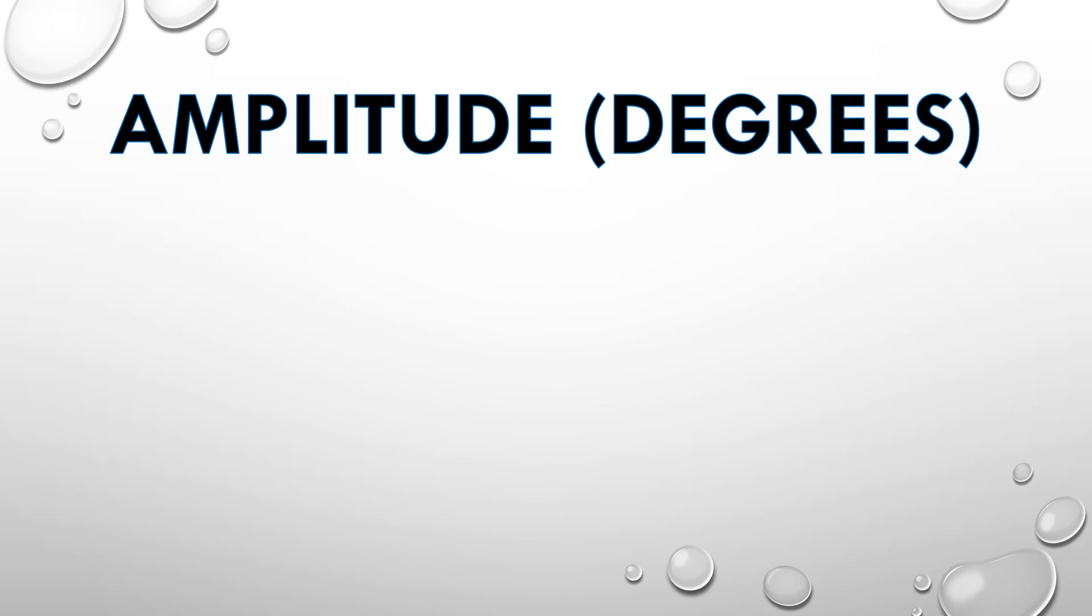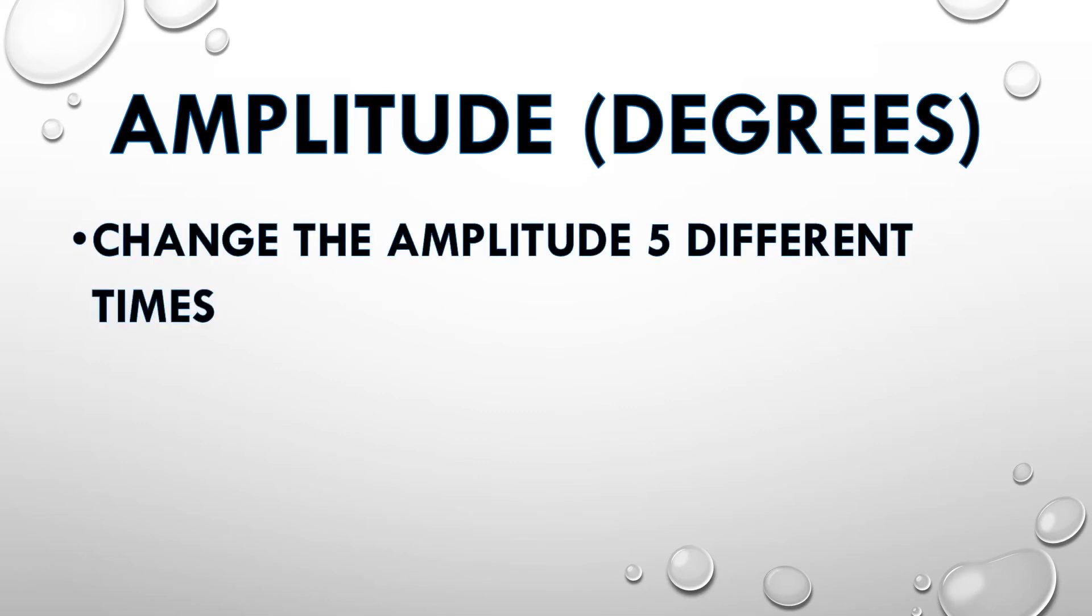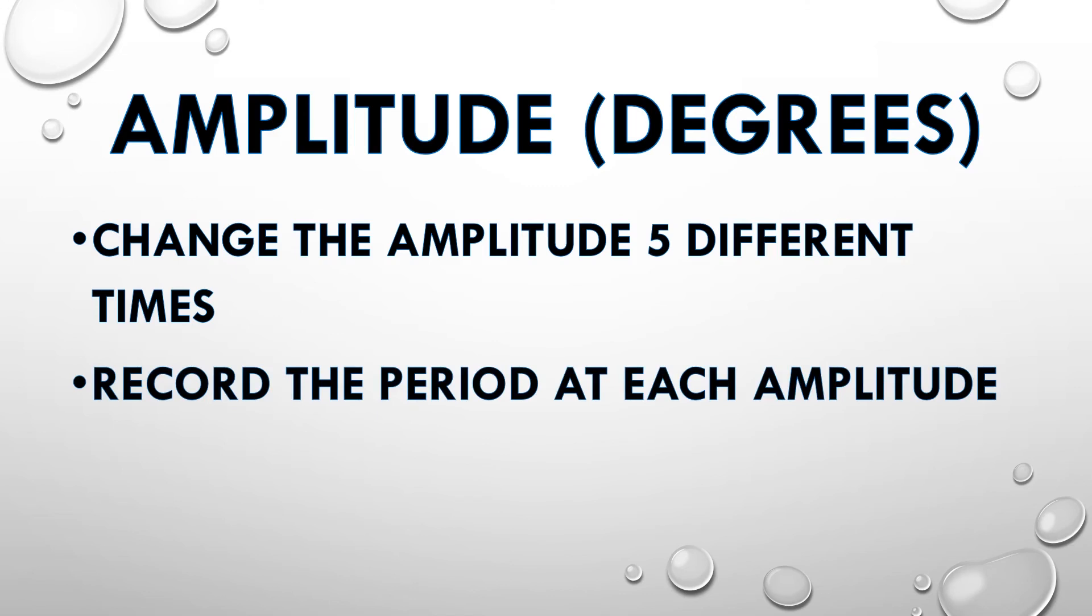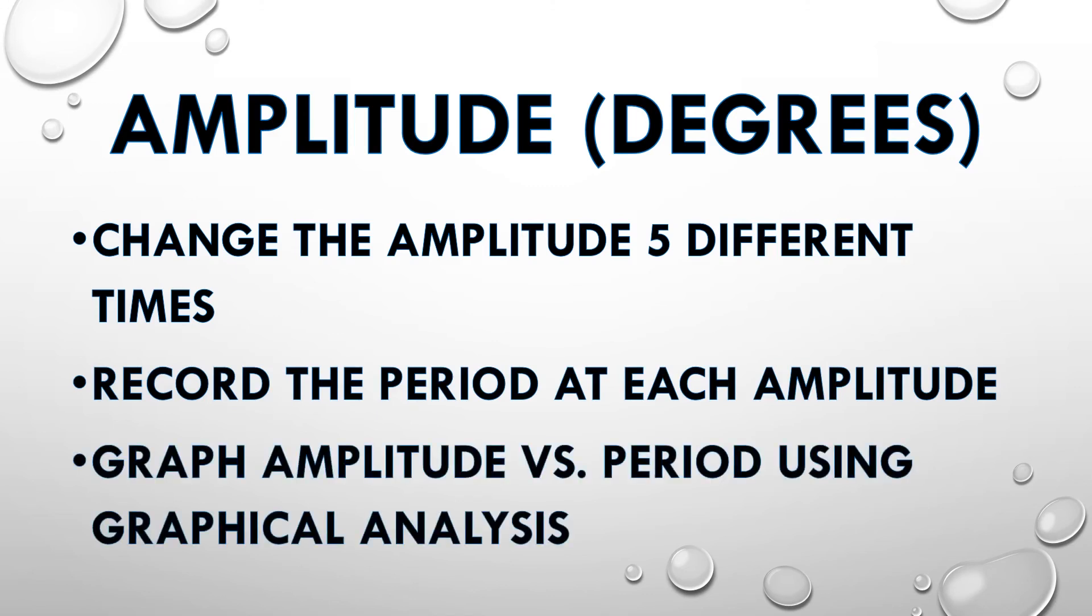The same for amplitude, the degree at which you release the pendulum from. Change the amplitude five different times, record the period at each amplitude, and then graph amplitude versus period using graphical analysis.